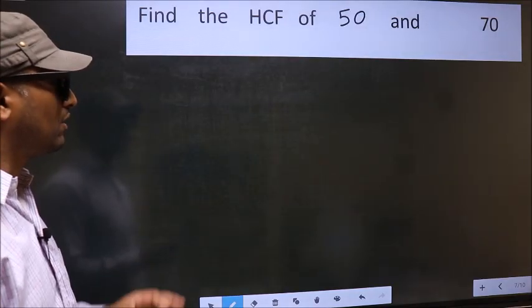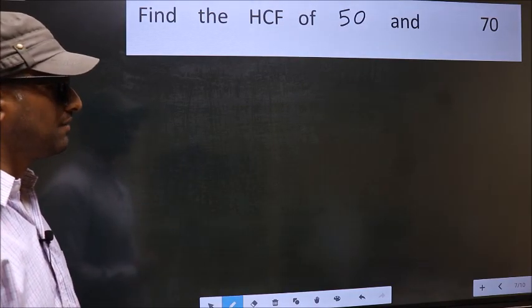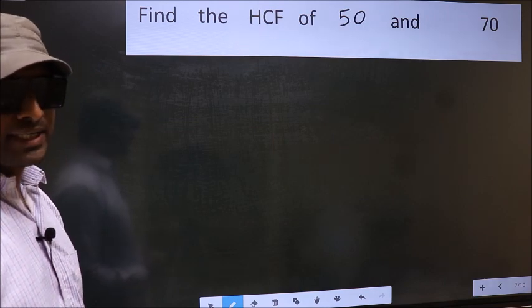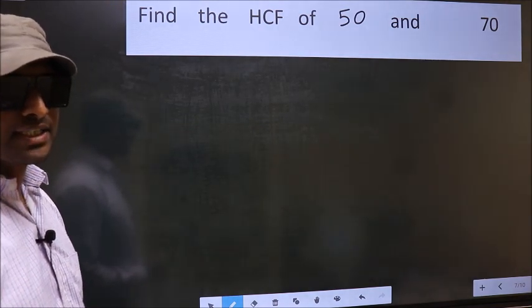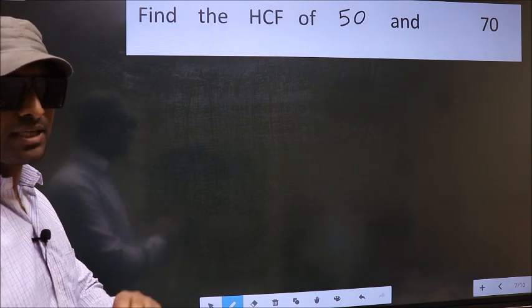Find the HCF of 50 and 70. To find the HCF, we should do the prime factorization of each number separately.